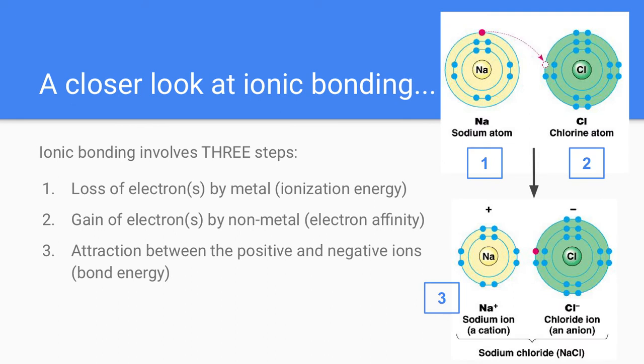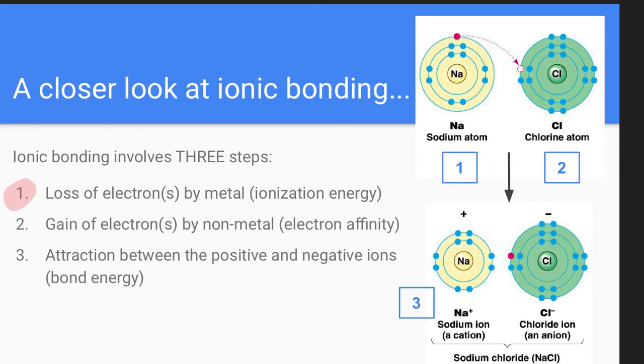Let's take a closer look at ionic bonding, because we've got the formation of ions happening, and then the attraction of the two ions coming together. Ionic bonding actually occurs in three steps. The first step is the loss of electrons by the metal. If we remember from our previous video, this is also termed as our ionization energy.